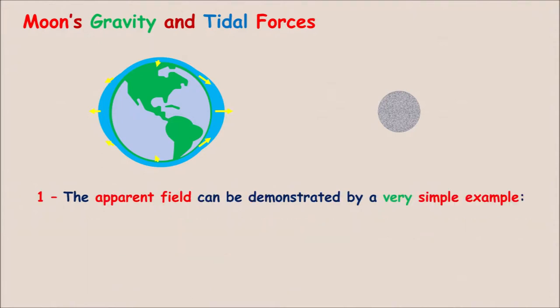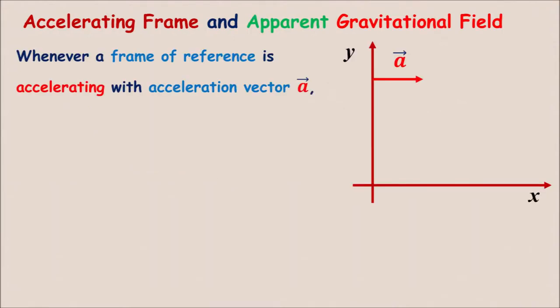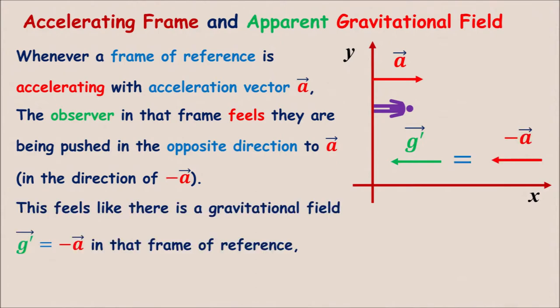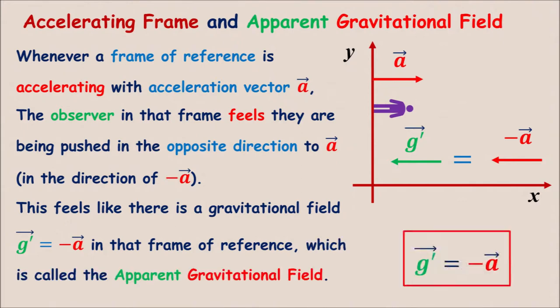The apparent field can be demonstrated by a very simple example. A person in an elevator accelerating upward or downward. Whenever a frame of reference is accelerating with the acceleration vector A, the observer in that frame feels they are being pushed in the opposite direction to A, which is the direction of negative A. This feels like there is a gravitational field G prime, which is equal to negative A in that frame of reference, which is called the apparent gravitational field.